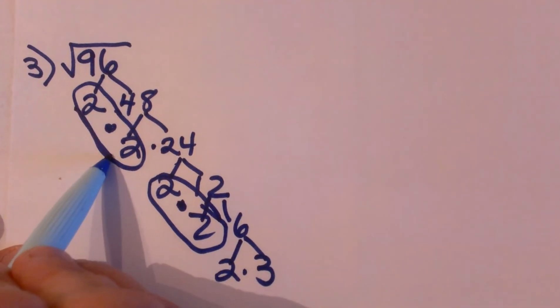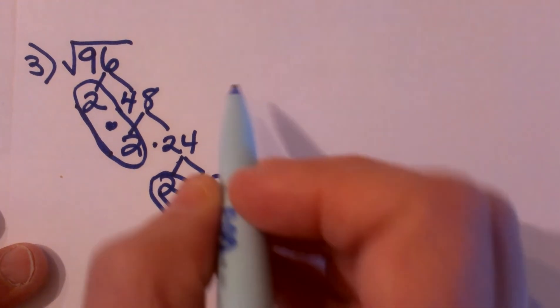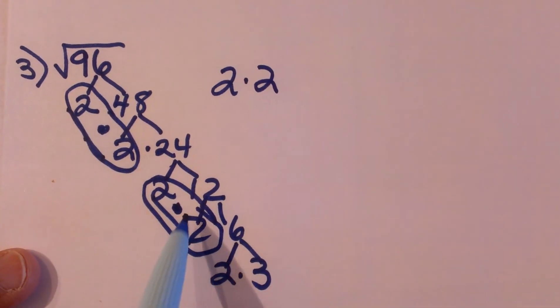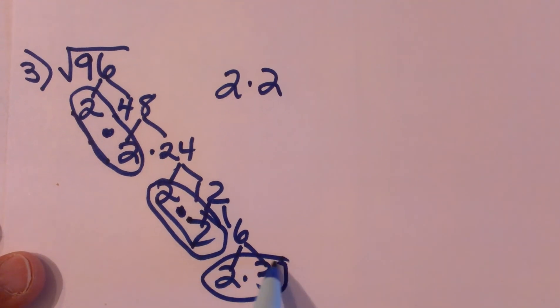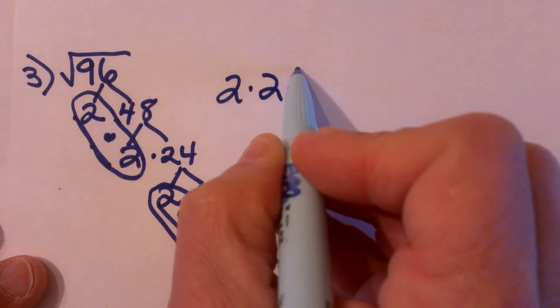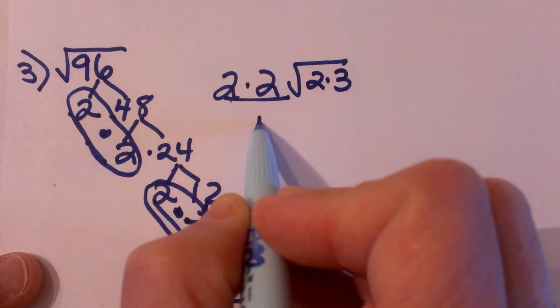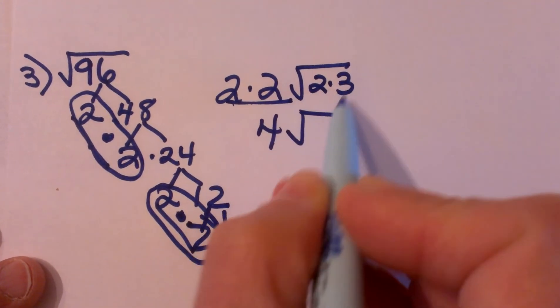So I am going to take this pair of twos out and this pair of twos out. So I am going to have 2 times 2 to represent each pair of twos. And then the 3 times 2 has to stay in the radical. So let's simplify that back down again 2 times 2 is 4 square root of 6.